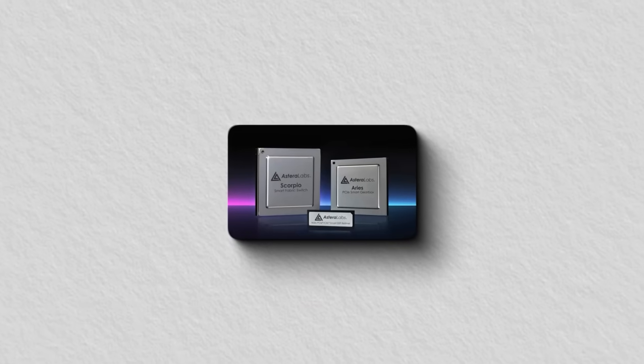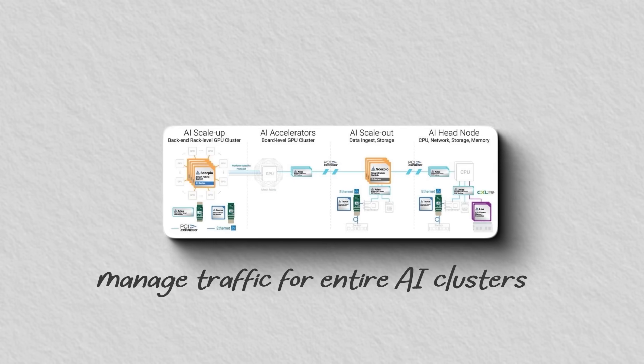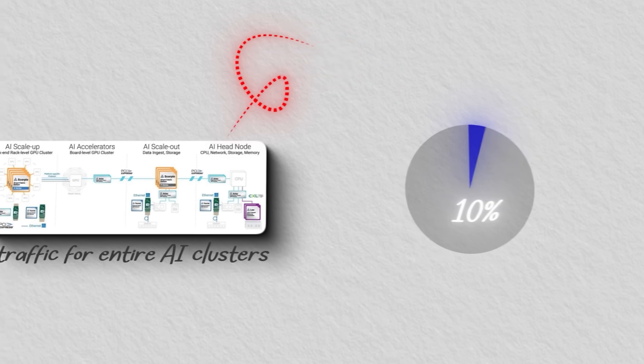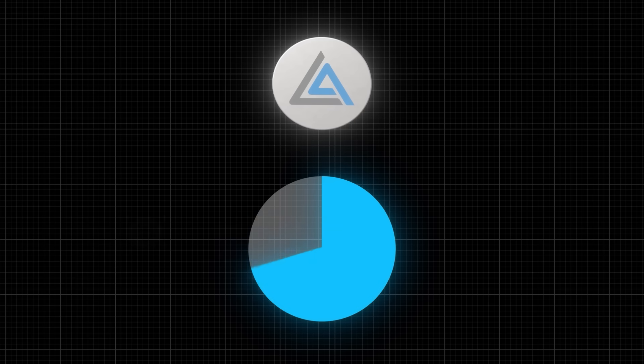Scorpio switches, launched in 2024, manage traffic for entire AI clusters. And they're already 10% of revenue after just months.